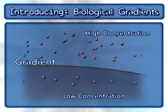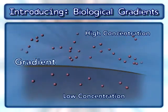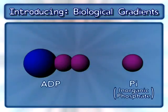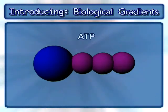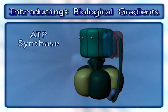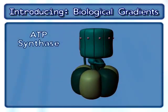This animation will demonstrate how the potential energy that results from a hydrogen ion gradient uses ADP and inorganic phosphate, also known as PI, to synthesize ATP. This process involves an enzyme complex called ATP synthase.